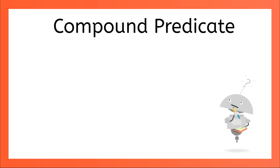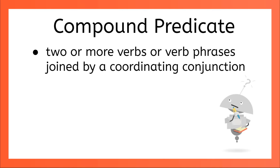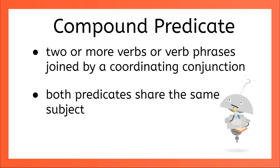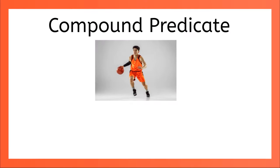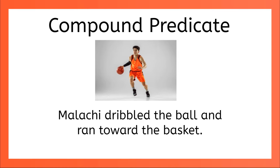You may have already guessed that sentences can also have compound predicates. A compound predicate contains two or more verbs or verb phrases that are joined by a coordinating conjunction. These predicates share the same subject. For example, in the sentence, Malachi dribbled the ball and ran toward the basket — we have one subject, Malachi, doing two different things. He dribbled the ball and ran toward the basket. These two verb phrases are joined by the coordinating conjunction AND.